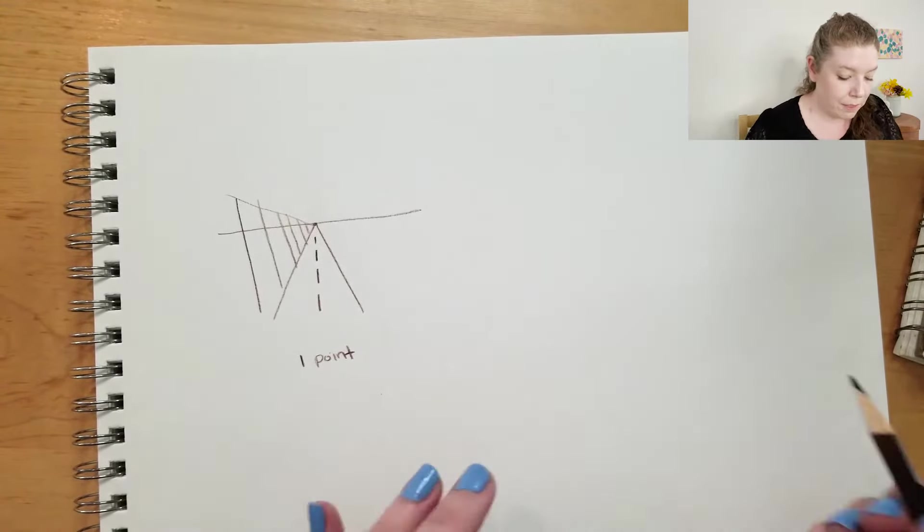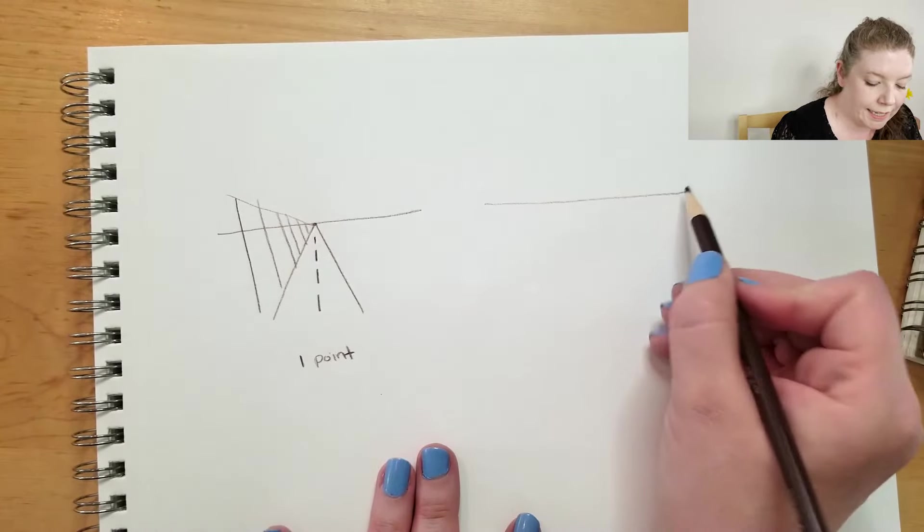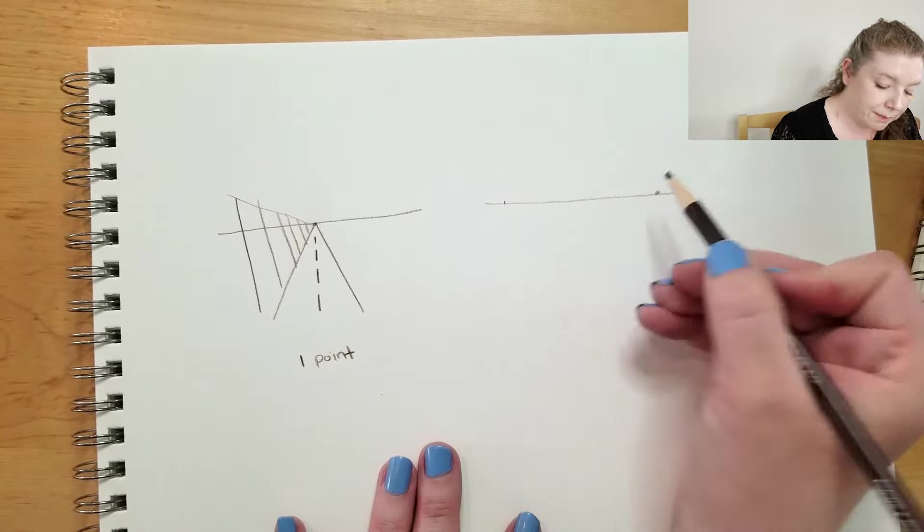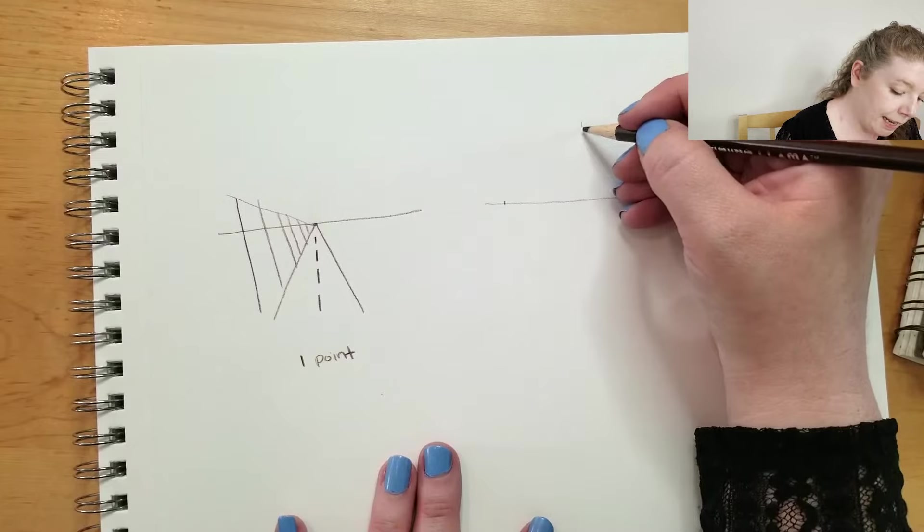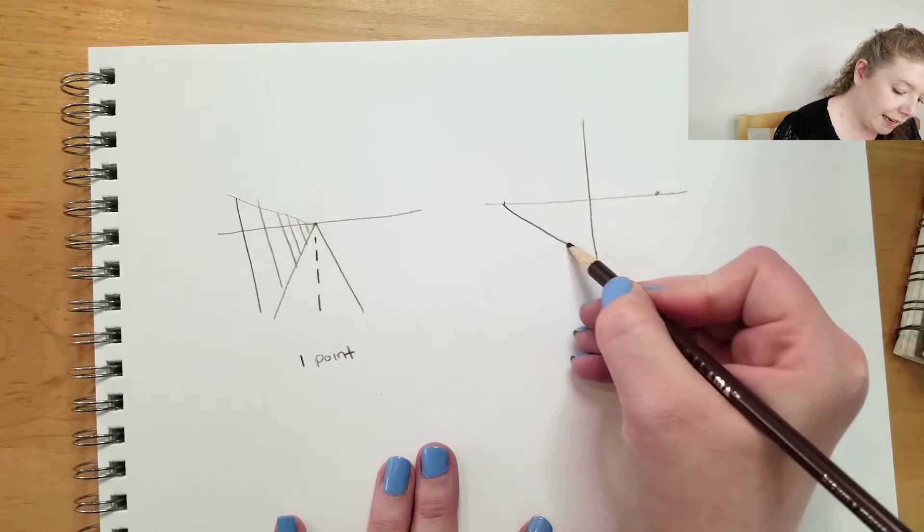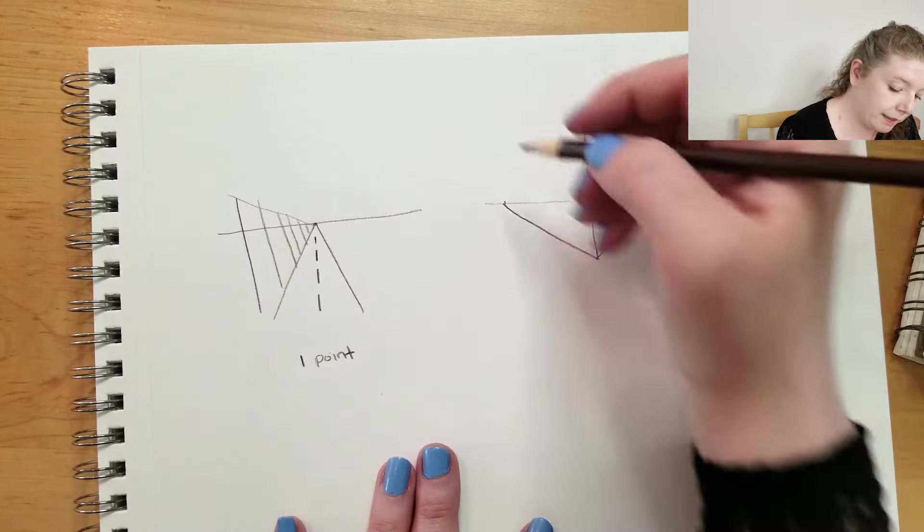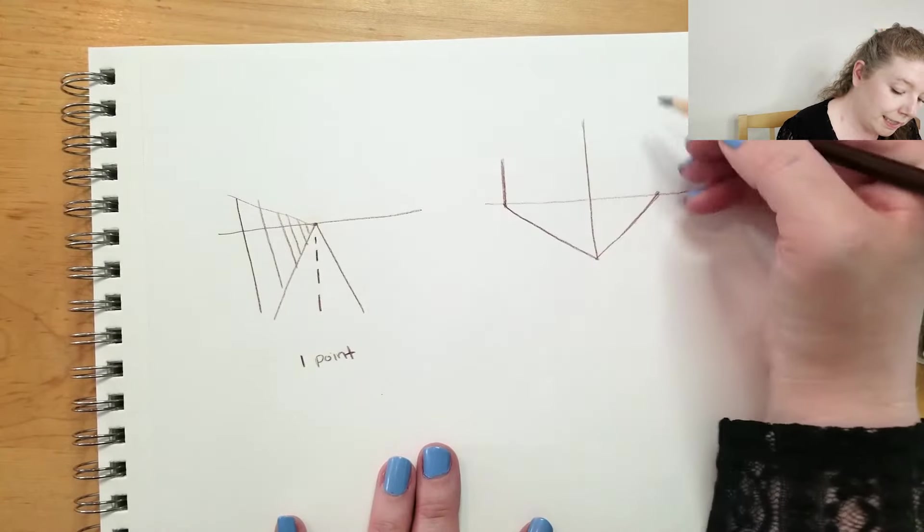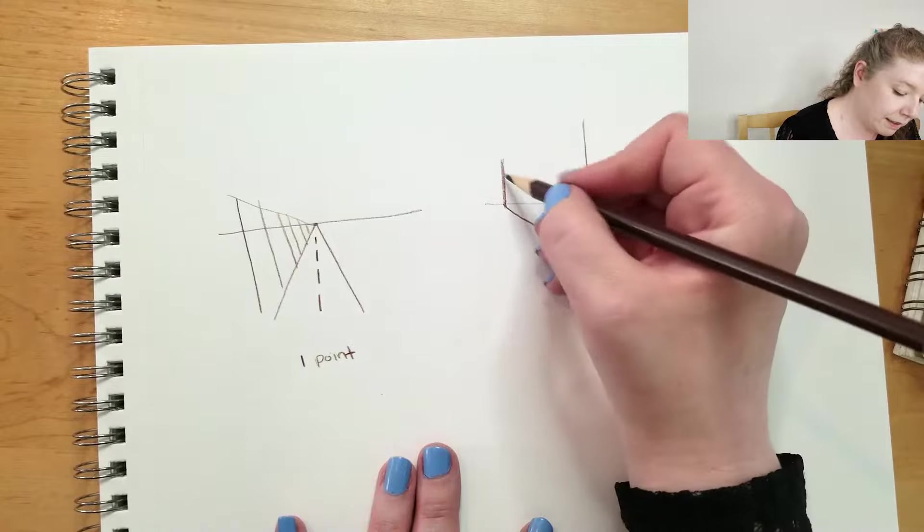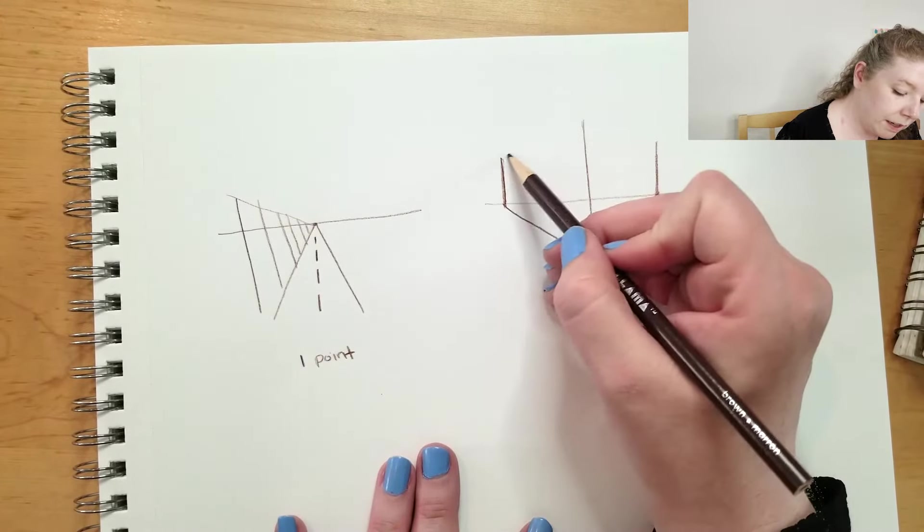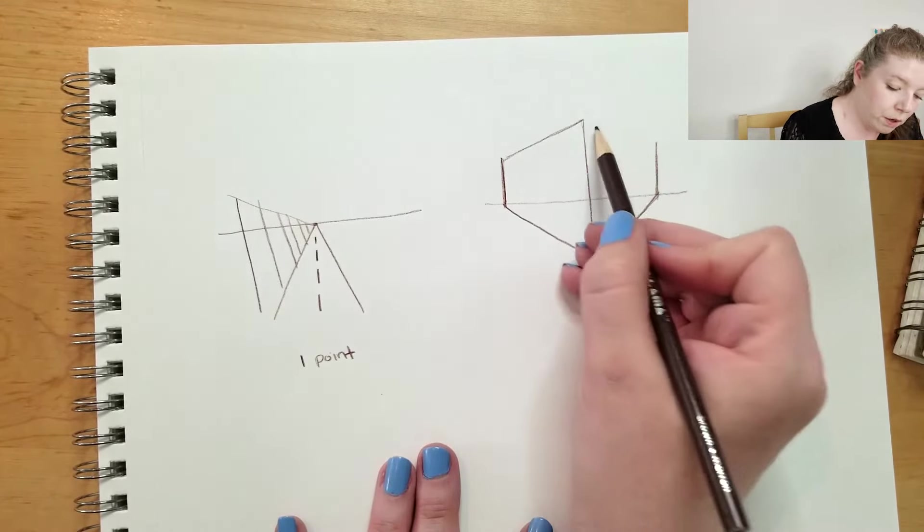Two-point perspective means that you have a horizon line and you have two points. So let's say you're looking at the side of a building and you have the corners that go off to these two different points.